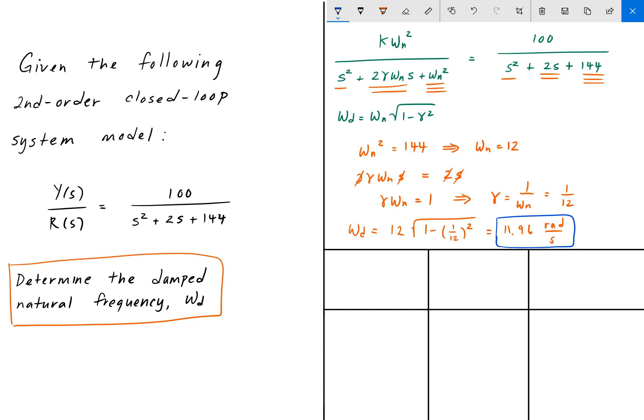So what does that mean? That means that if we have a damping coefficient of 1 over 12, then our frequency will decrease from the 12 radians per second, which was omega n, to omega d, which is 11.96. We're going to have a drop in frequency as this gamma factor becomes larger.